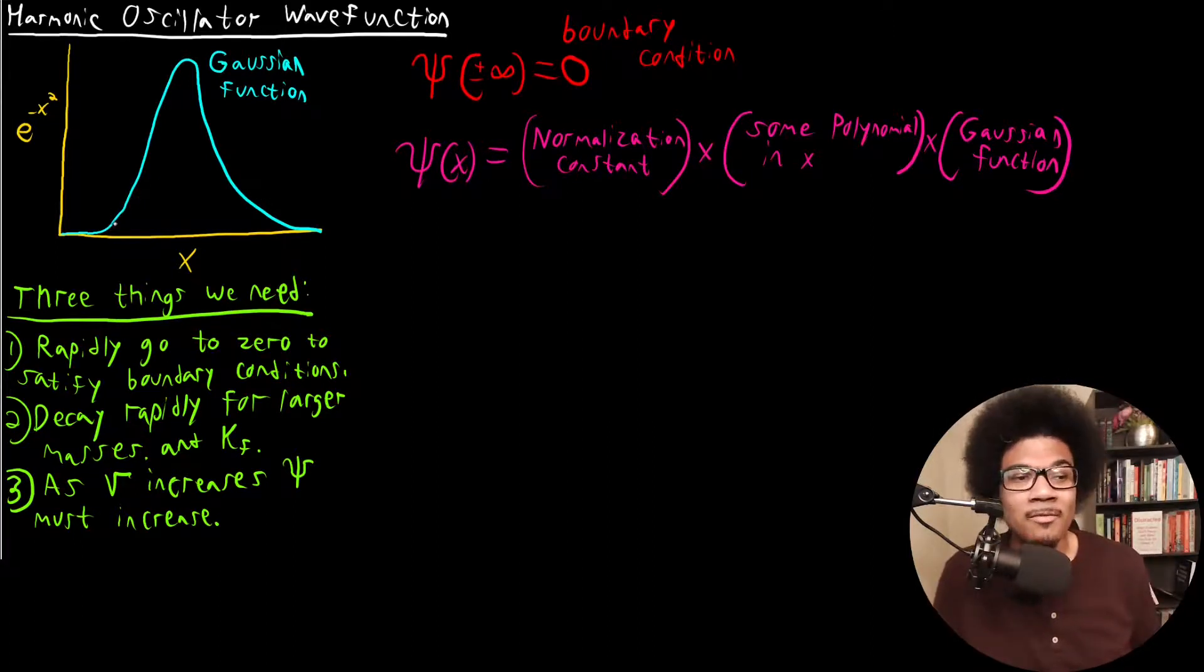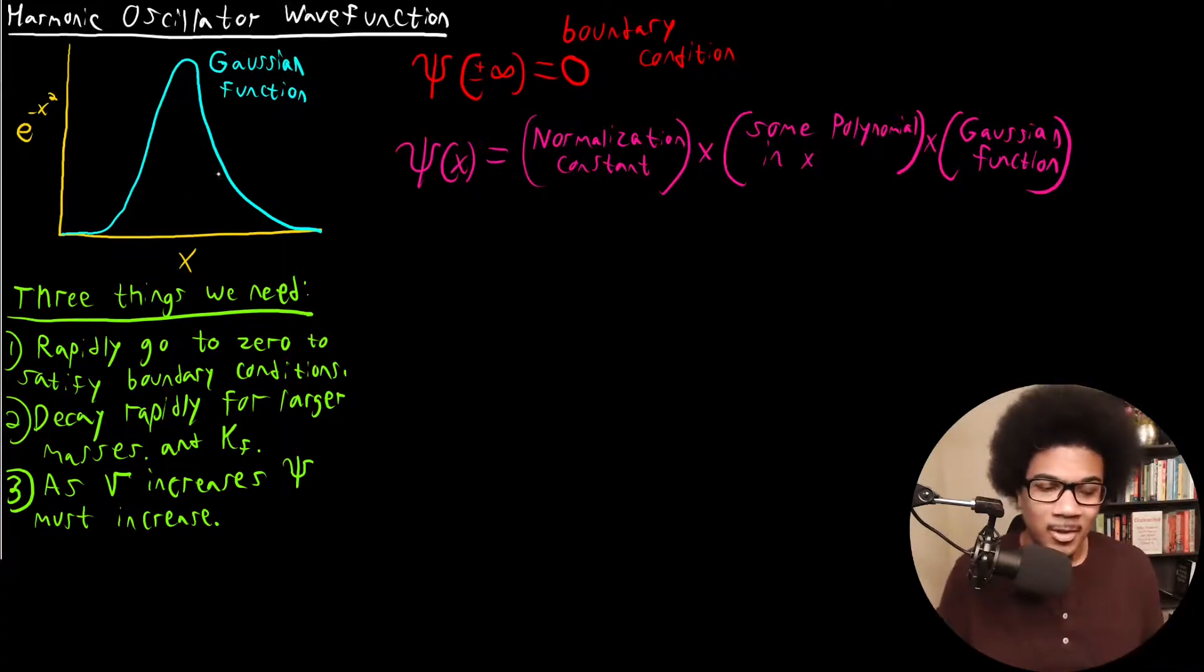And so it becomes a very useful function because you can really create whatever you want on top of this. We talked about quantum superposition—you can get a superposition of a bunch of these Gaussians and fit darn near anything really to what you need. So a Gaussian function is really useful, and it's going to be useful for us for purpose one here. We need something that rapidly goes to zero. The Gaussian function decays faster than most. It gives you a good value and a good spread, but it also decays very quickly.